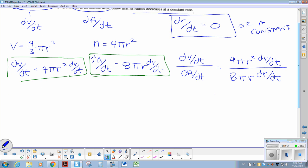So we can do a little bit of simplification here. So the pi's will cancel, that r will get rid of the exponent, and our dr by dt's drop out of the equation. So we find that the change in the volume with respect to the change in surface area is equal to r over 2. 4 over 8 reduces to a half.